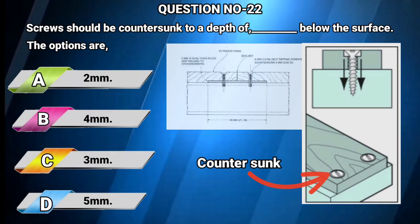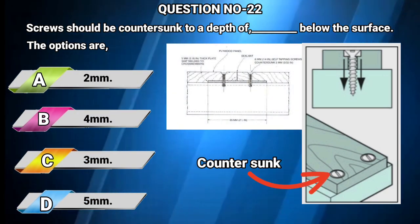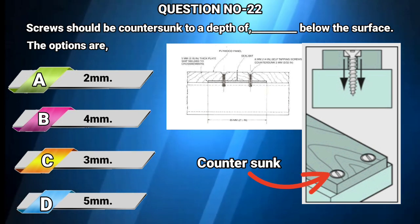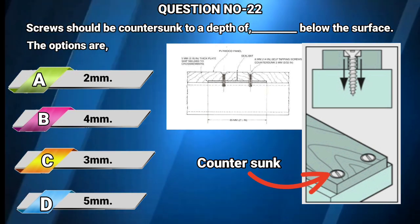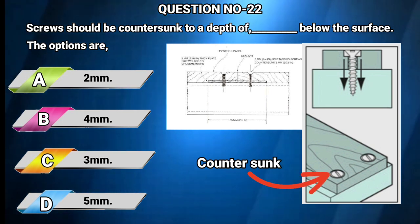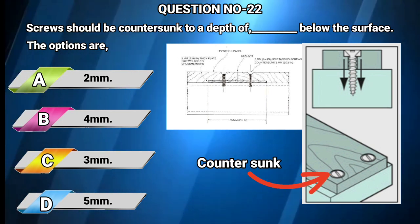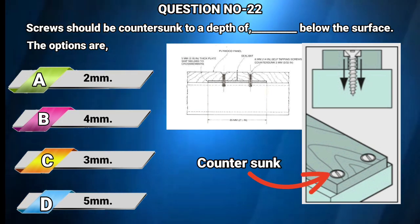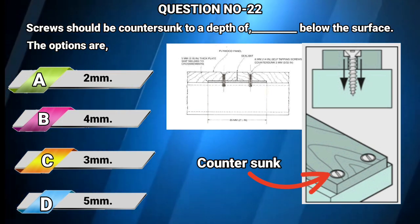Question number 22: Screws should be countersunk to a depth of — below the surface. Options: A) 2 mm, B) 4 mm, C) 3 mm, D) 5 mm. The answer is A: 2 mm.